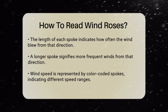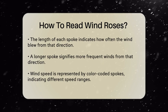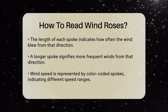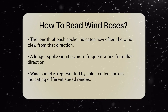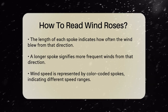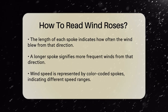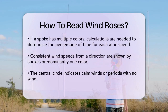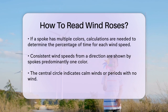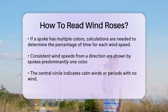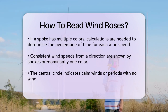To understand wind speed, things get a bit more complex. The spokes are often color-coded to show different wind speed ranges. For example, one color might represent winds of 5 to 15 miles per hour, while another color represents winds of 15 to 25 miles per hour. If a spoke has multiple colors, you need to do a little math to figure out the percentage of time each wind speed occurred. For example, if 72% of the time the wind blew from the west and 56% of that time it was at 5 to 15 miles per hour, the remaining 16% would be at 15 to 25 miles per hour.